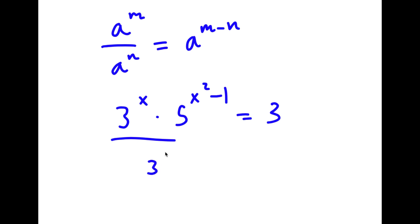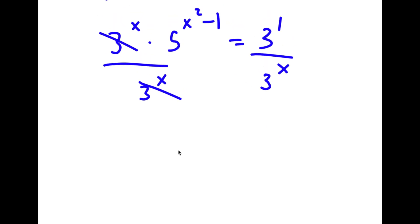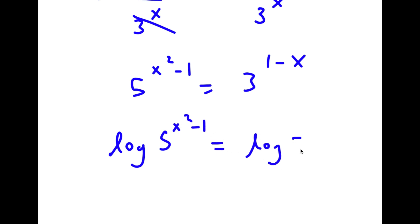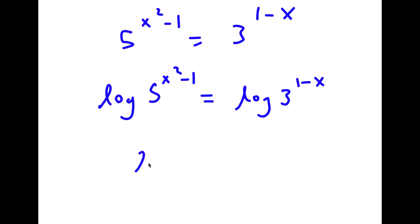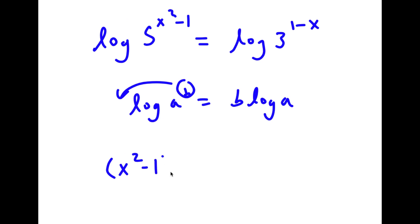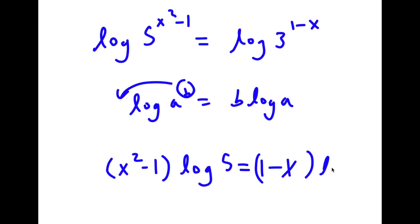Now I'm going to divide both sides by 3 to the power of x. So these two cancel out, and 3 to the power of 1 over 3 to the power of x is the same thing as 3 to the power of 1 minus x. Taking the log on both sides, I get log 5 to the power of x squared minus 1 is equal to log 3 to the power of 1 minus x. Since log a to the power of b equals b times log a, I have x squared minus 1 times log 5 is equal to 1 minus x times log 3.